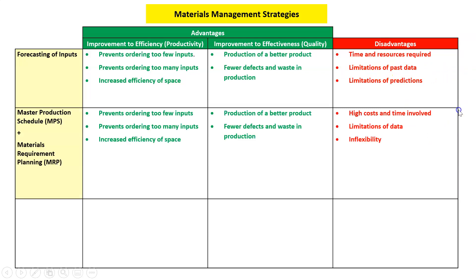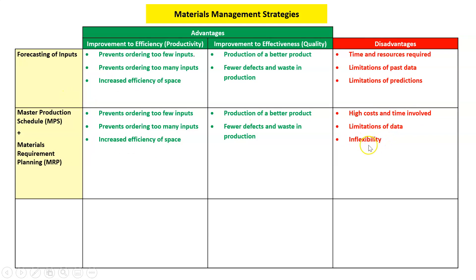For master production schedule and materials requirement planning, we'll group them together. We get the same improvements to efficiency and effectiveness as with forecasting. However, there's high cost and time involved, plus limitations of data — the data going into the system to make predictions might be limited. It's also inflexible: what if we need to change all the schedules we've come up with?